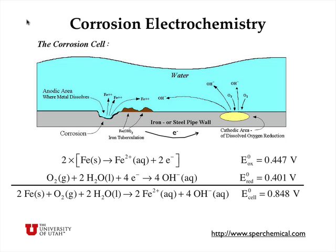So how does corrosion work? Whenever iron or steel comes into contact with water and oxygen, you can form anodic areas of the metal and cathodic areas of the metal. In an anodic area, oxidation of the metal takes place to form iron 2+ ions. In the cathode region, oxygen is reduced to form hydroxide ions, and electrons run through the metal from the anodic to the cathodic region. You get a little electrochemical cell that builds up, pitting the metal, while other places act as cathodes to reduce oxygen.